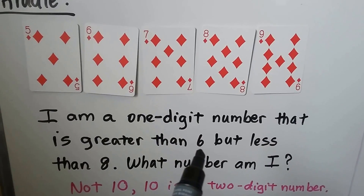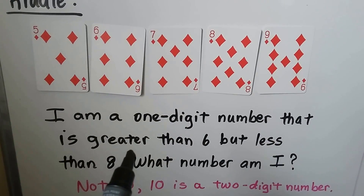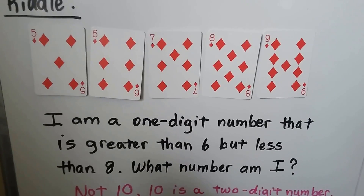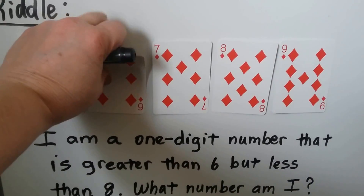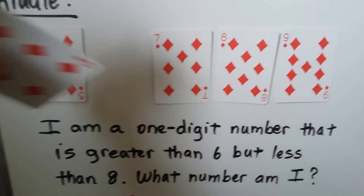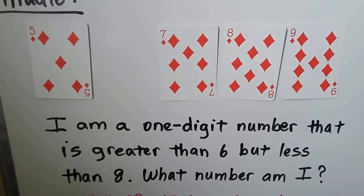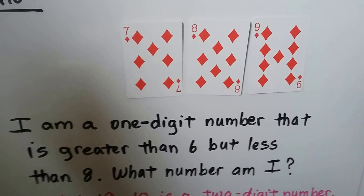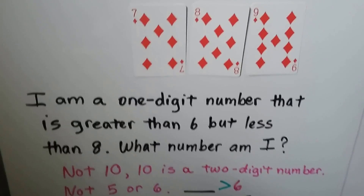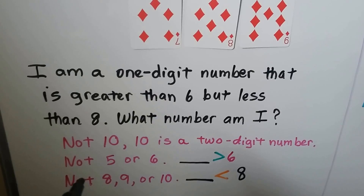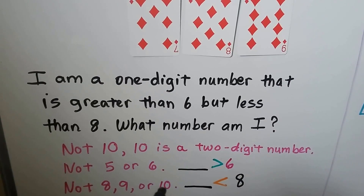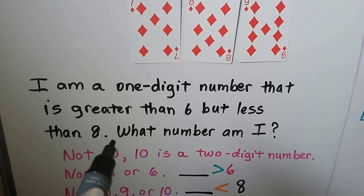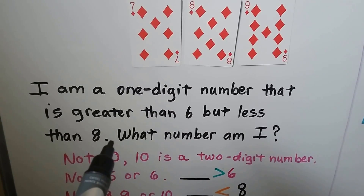The number is greater than 6, so it can't be 6, and it can't be 5 because 5 is not greater than 6. And it's not 8, 9, or 10 because it says it is less than 8.